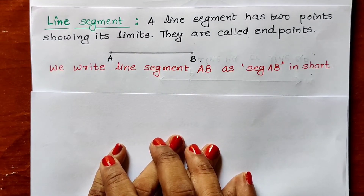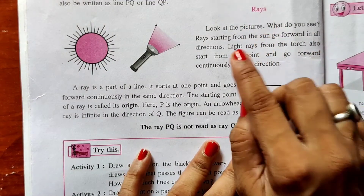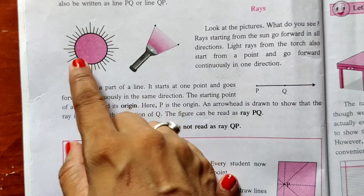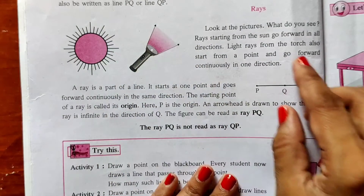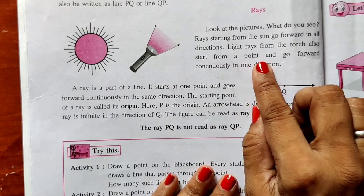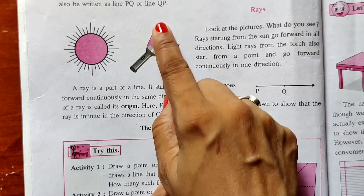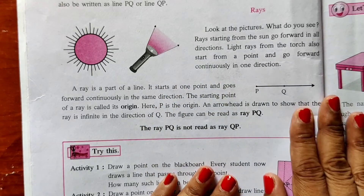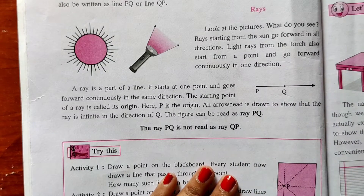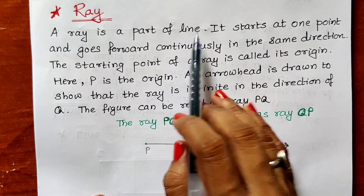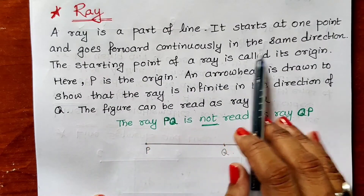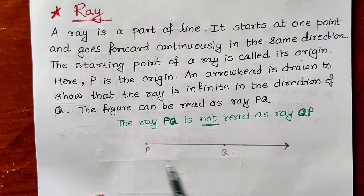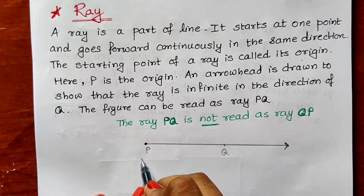Now let us go to the next concept in geometry — rays. Look at the pictures. Rays starting from the sun go forward in all directions. Light rays from a torch also start from a point and go forward continuously in one direction. So a ray is a part of a line. A ray starts at one point and goes forward continuously in the same direction. The starting point of a ray is called its origin.